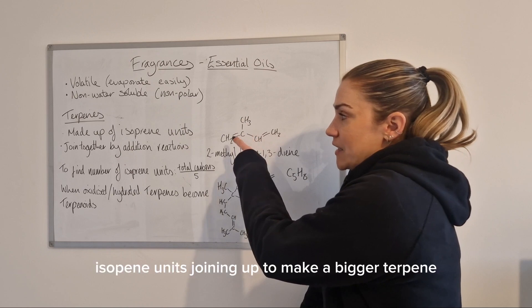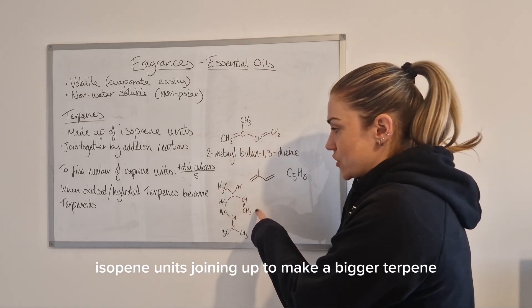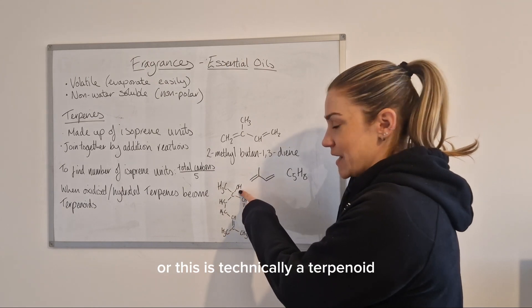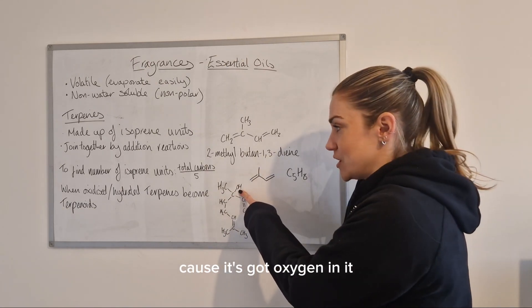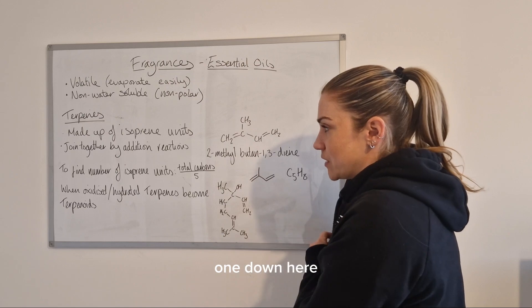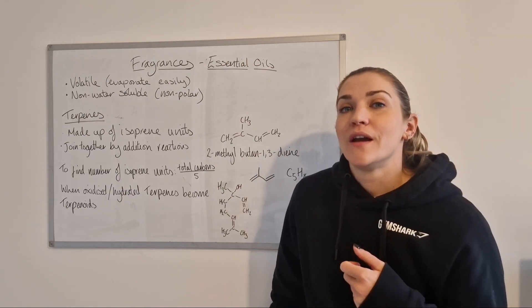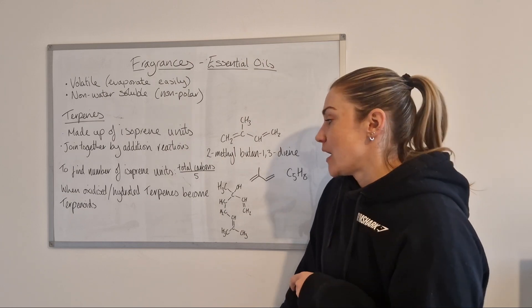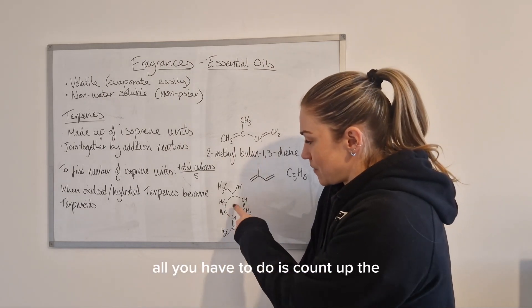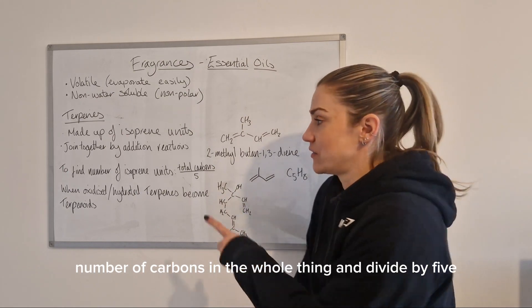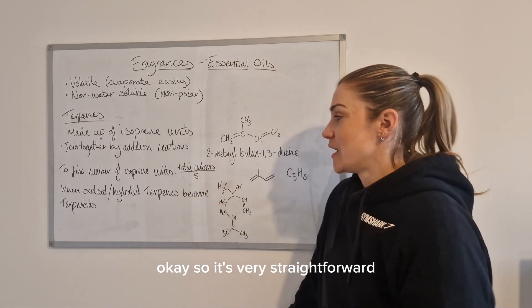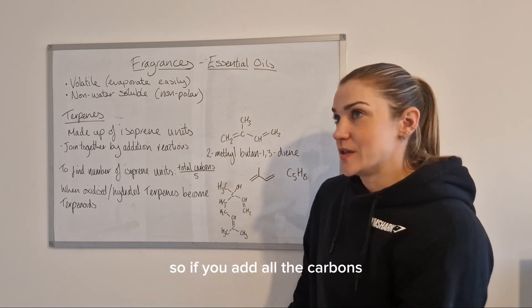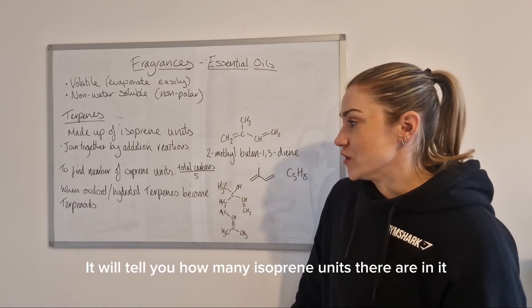Isoprene units join up to make a bigger terpene — though if oxygen is present, it's technically a terpenoid. Quite often you'll be asked how many isoprene units are in a terpene. To work that out, count up the total number of carbons in the molecule and divide by five. That's because there are five carbons in one isoprene unit, so dividing the total carbon count by five gives you the number of isoprene units.